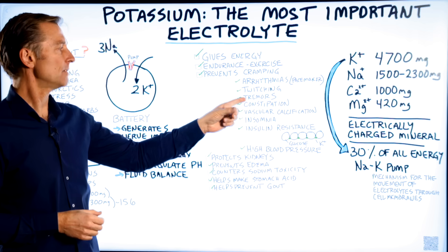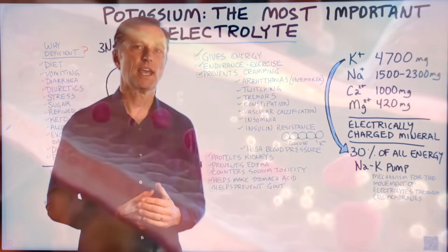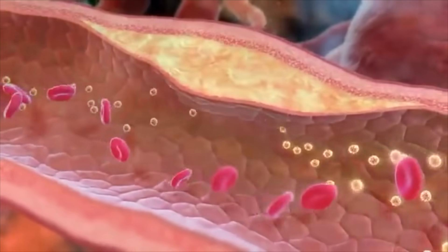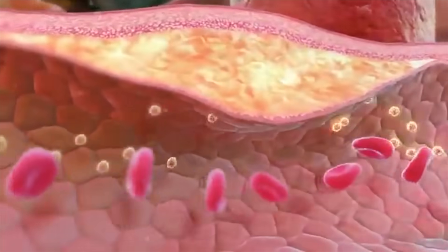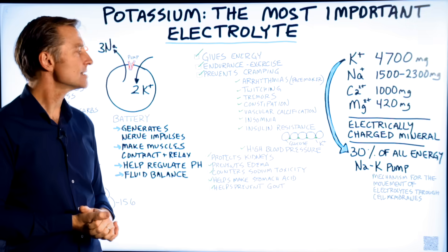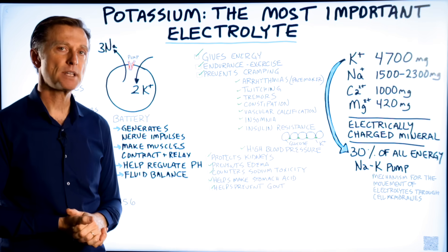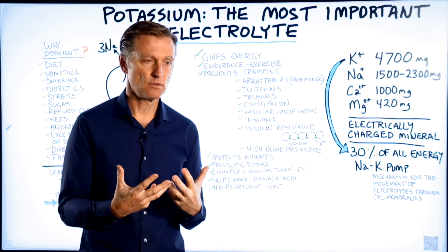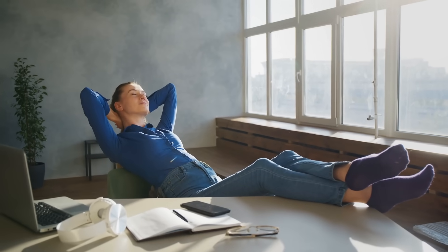Also, potassium is necessary to prevent vascular calcification. So potassium is definitely needed in the regulation of calcium. Now, without potassium, you get insomnia. You can't sleep. So potassium is a physiological tranquilizer. It relaxes the body much like magnesium does.